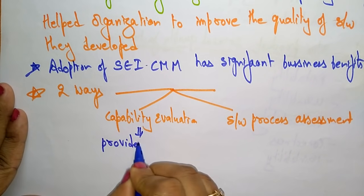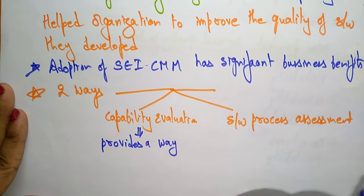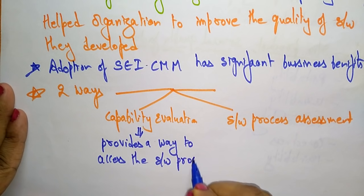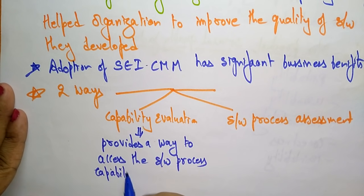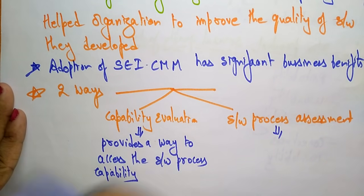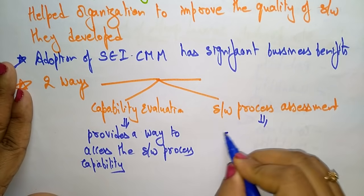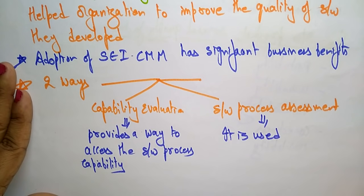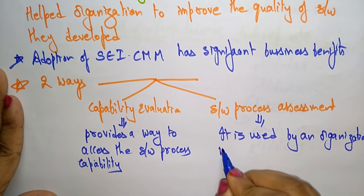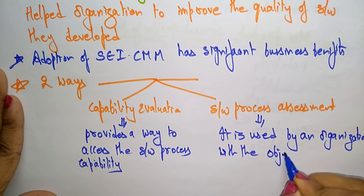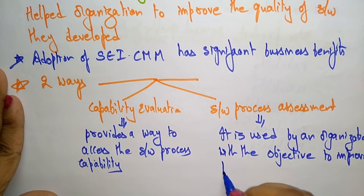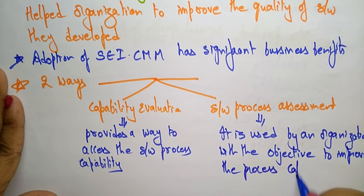The capability evaluation is going to provide a way to access the software process capability in an organization. And regarding Software Process Assessment, it is used by an organization with the objective of improving the process capability.